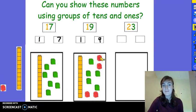We have made 19, but let's just double-check by counting. Remember, our rod or tower is always 10. 10, 11, 12, 13, 14, 15, 16, 17, 18, 19. Fantastic counting.